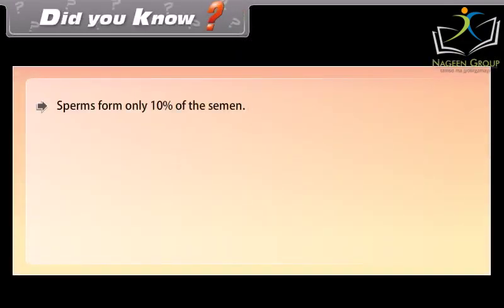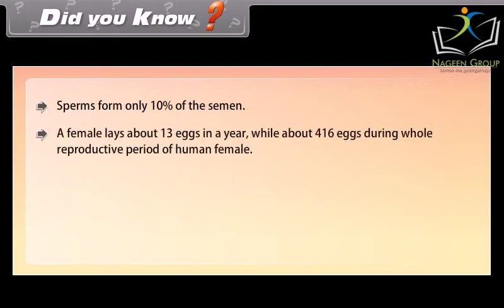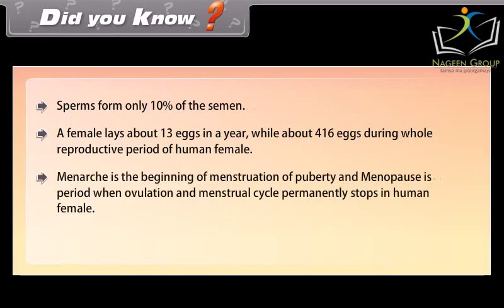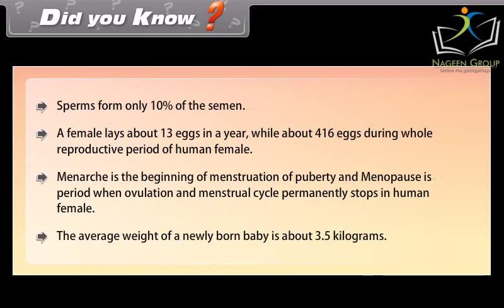Sperms form only 10% of semen. A female lays about 13 eggs in a year, while about 416 eggs during the whole reproductive period of a human female. Menarche is the beginning of menstruation at puberty, and menopause is the period when ovulation and the menstrual cycle permanently stops in human females. The average weight of a newly born baby is about 3.5 kilograms.